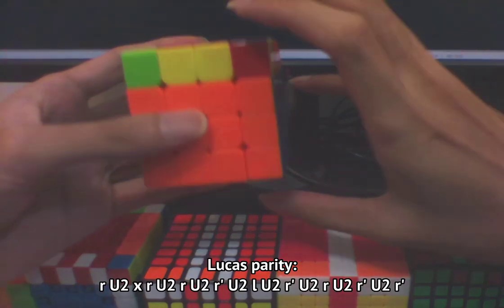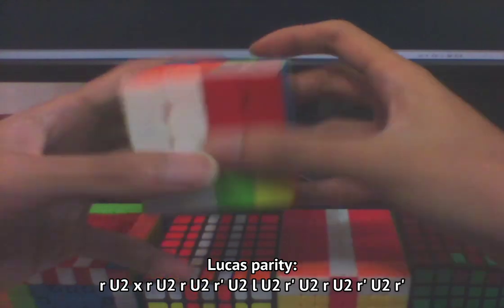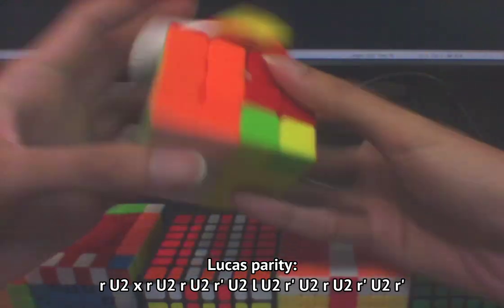First off, I'll be assuming that you use the Lucas Parity algorithm. That goes R U2 X, R U2 R and so on.